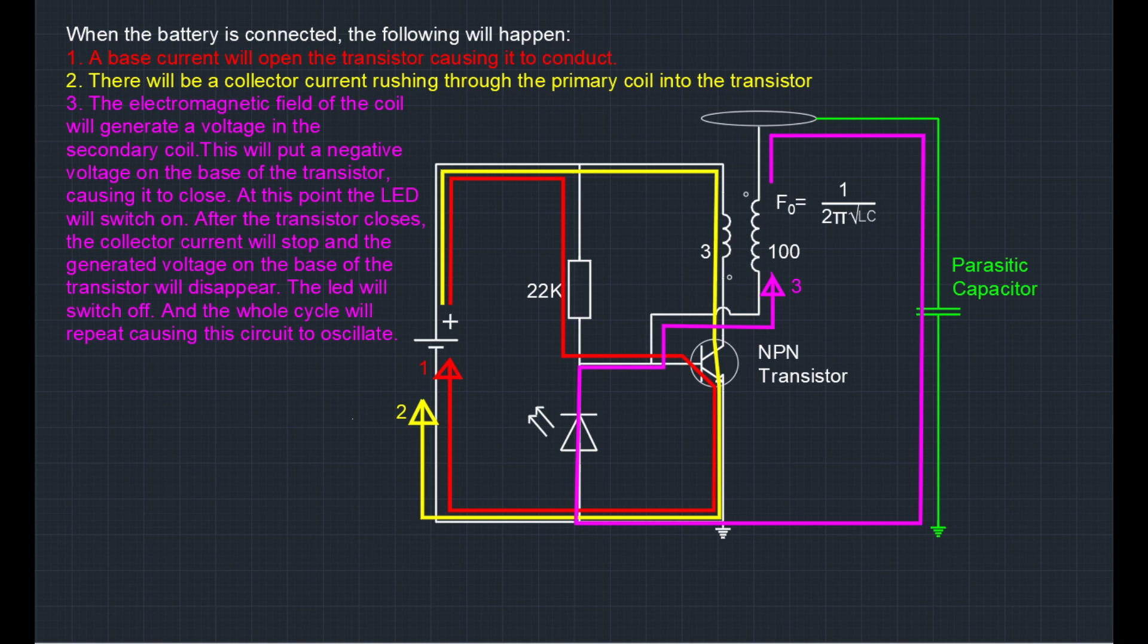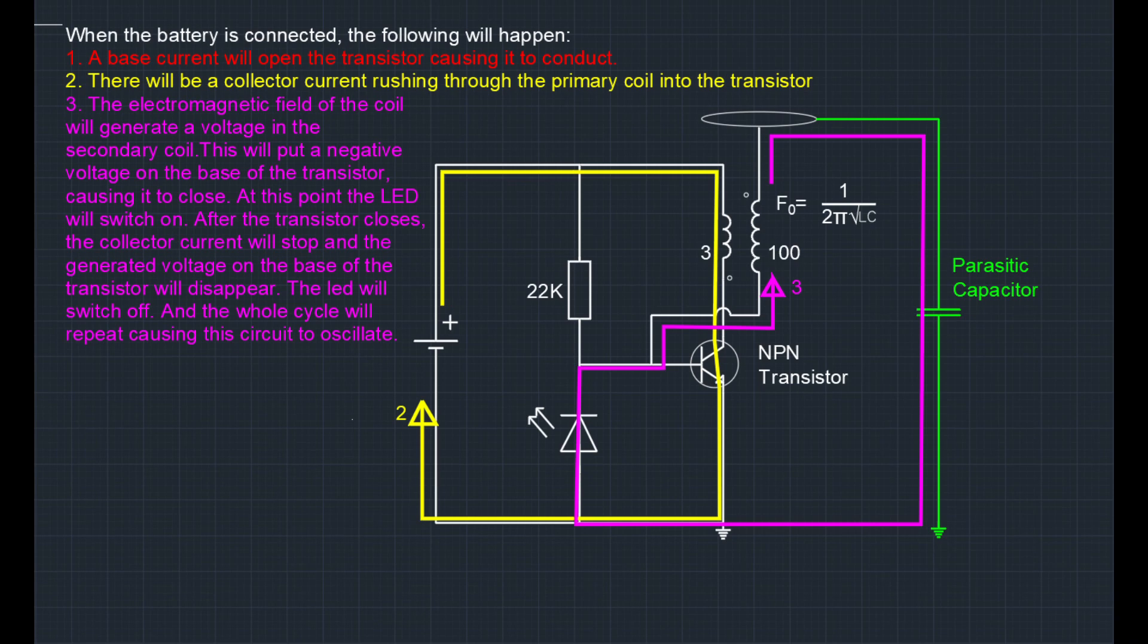The generated voltage in the coil will be negative on the side that is connected to the base of the transistor and positive on the side connected to the top load. Therefore the voltage on the base of the transistor will be negative in relation to earth and the transistor will close, causing the base current to stop. At this very moment the LED will light up for a brief moment. Because there is no more base current through the transistor it will stop conducting and the collector current is no longer present.